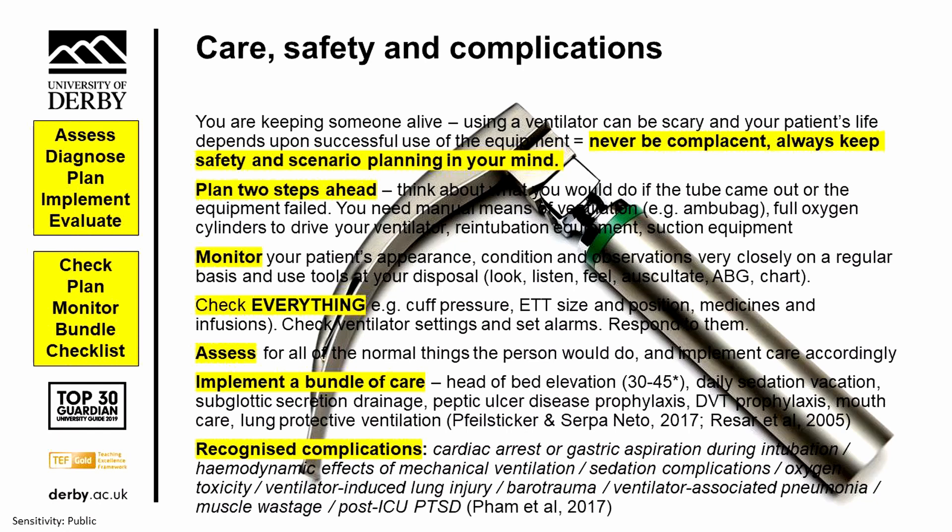As a nurse or doctor, it's really important to keep an eye on your patient's appearance and condition. Look, listen and feel — have a listen to their chest on a regular basis, look at their blood gases, and review the charts and documentation very regularly. Check cuff pressure at the bottom of the ET tube on a fairly regular basis, recording it and making sure it's within acceptable boundaries. We should also be checking medicines and infusions regularly to see what's running out and planning ahead.